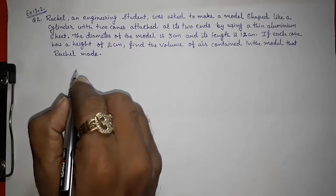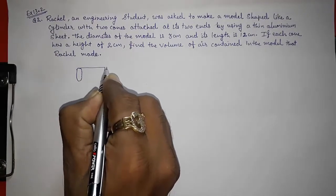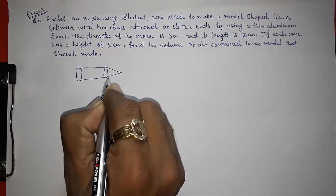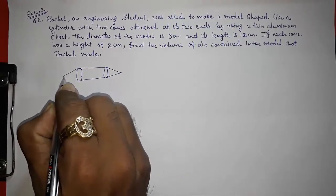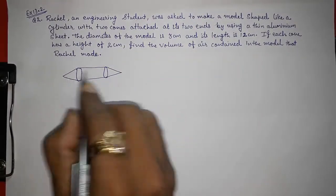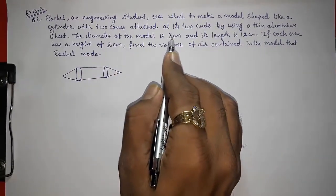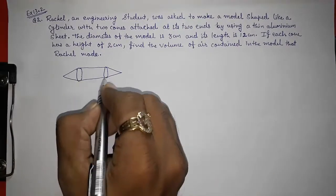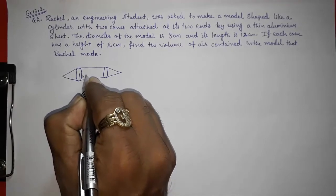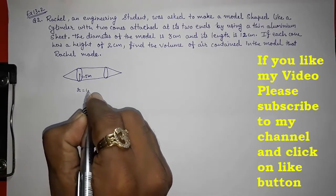So what we are going to do, look here, this is a cylinder having two cones attached on both the side. They said a cylinder and two cones attached at both the side made up of aluminum sheet. The diameter of the model is 3, so this diameter will be 3. So the radius will be 1.5 cm. Take it as radius 1.5 cm.